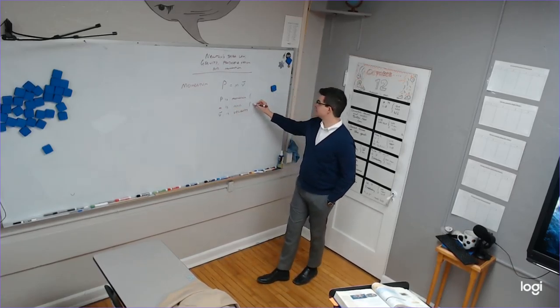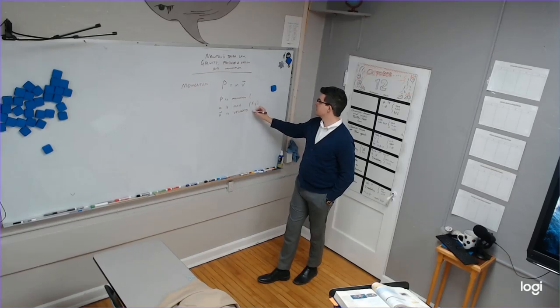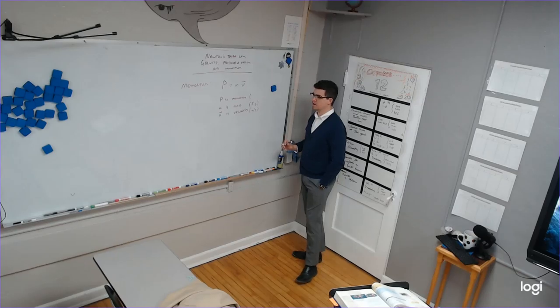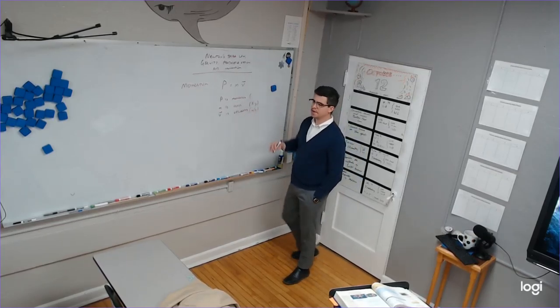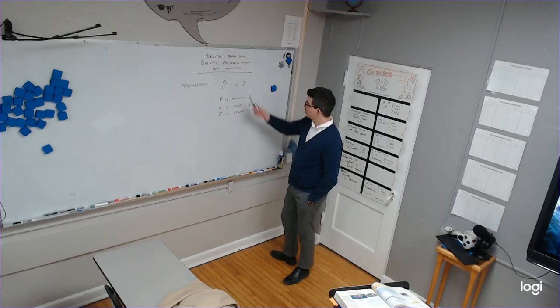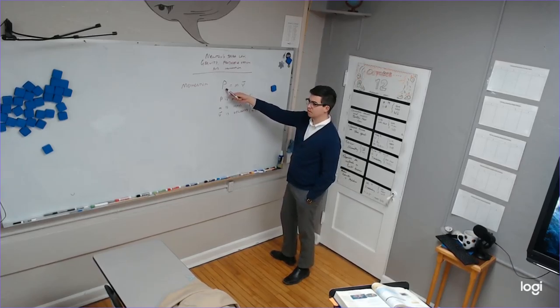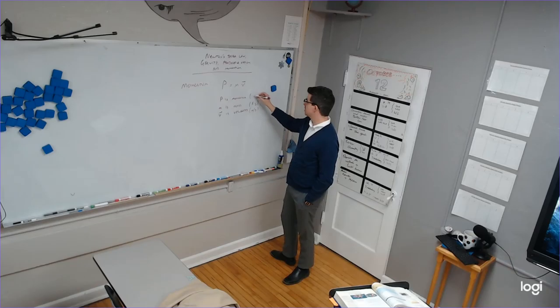Mass is measured in? Kilograms. Kilograms. Velocity is measured in? Sub. Meters per second. Meters per second. I was waiting for someone to say squared, but it's not meters per second squared. Just meters per second. So then what would momentum be measured in? Well, mass times velocity is momentum. Kilograms times meters per second is? Meters. Kilograms times meters per second.